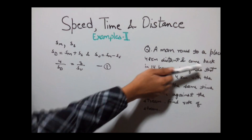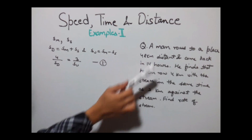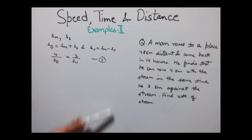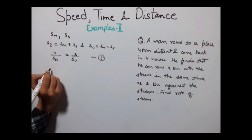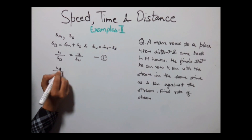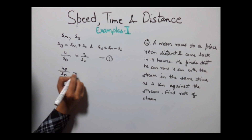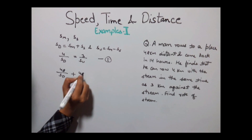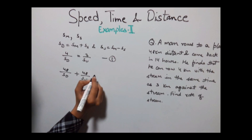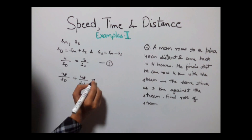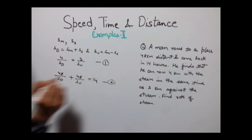The second equation is that he rows to a place 48 km distant and comes back in 14 hours. So: 48 divided by speed of downstream plus 48 divided by speed of upstream equals 14 hours. This is our second equation.